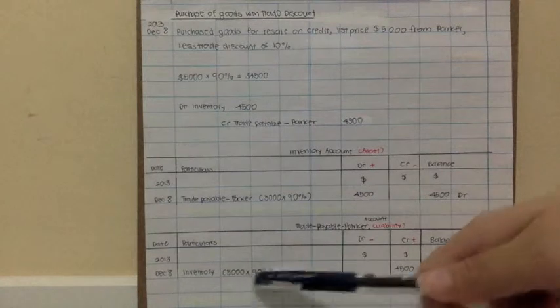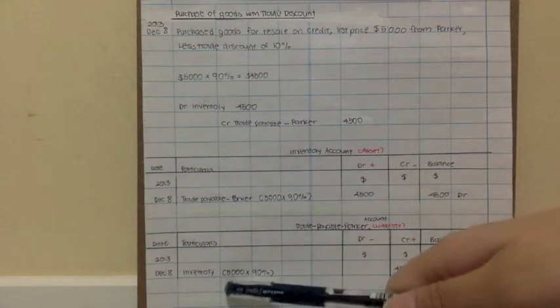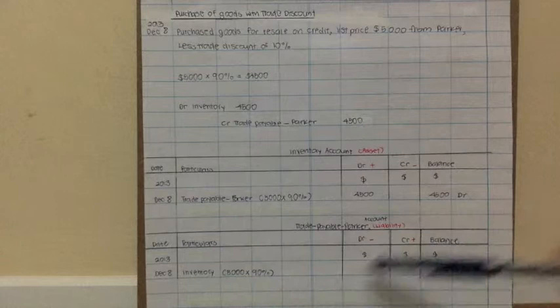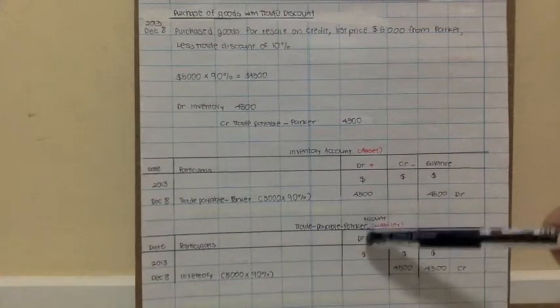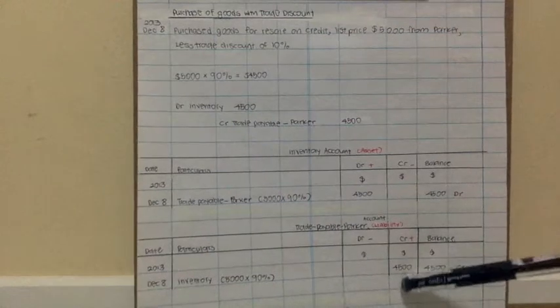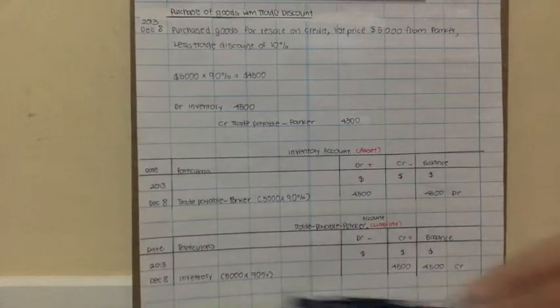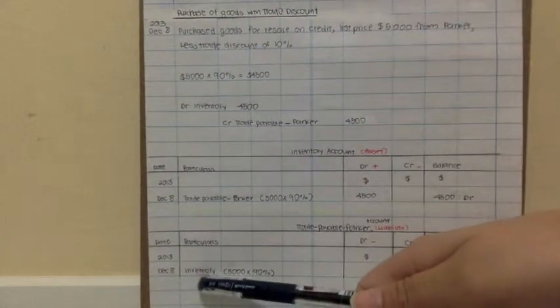Remember to do the working: $5,000 times 90%. This actually also, if you want to interpret it, can be: trade payable Parker, why we owe Parker $4,500, is because we bought inventories.